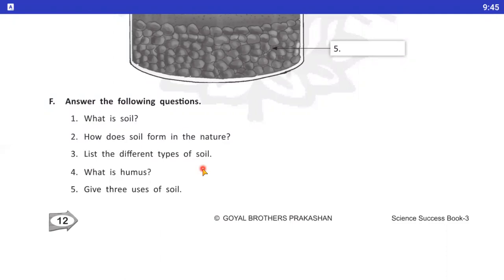These large pieces, rocks ki jo large pieces thay, convert into tiny particles of soil. It is a continuous process. Ye process joh hai, woh lagataar chalta raha hai. And takes thousands of years. Aur isko banne me, soil banne me, thousands years lag jate hai. Question number 3. List the different type of soil. Types of soil hooti hai, three types of soil hooti hai. Clay soil, loamy soil and sandy soil.